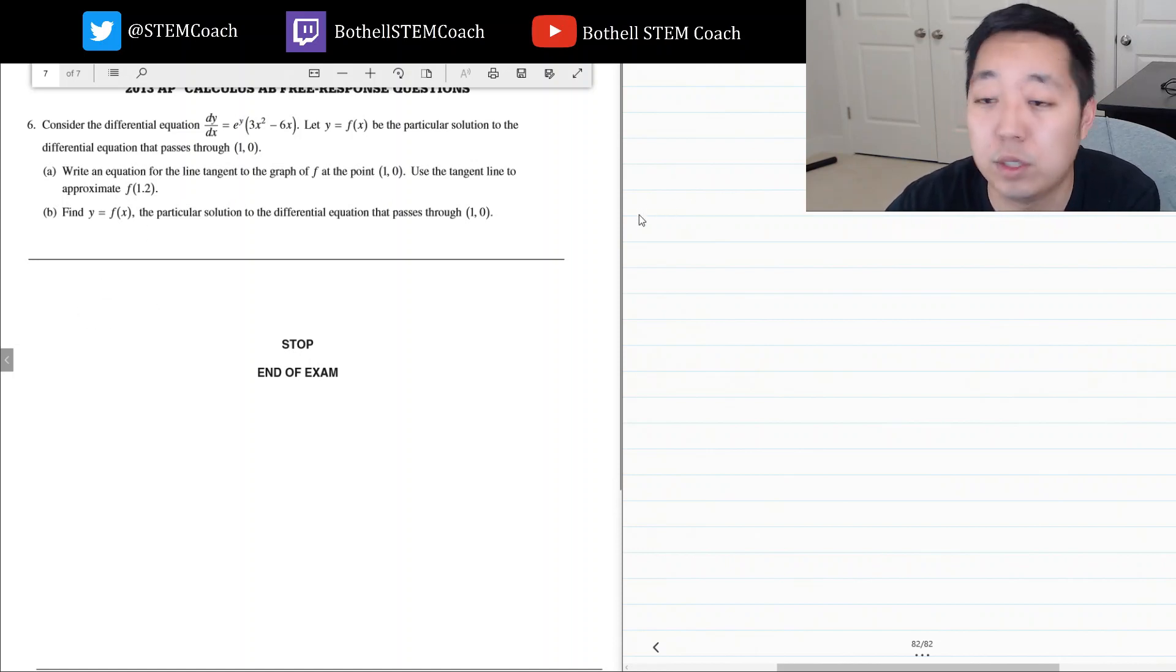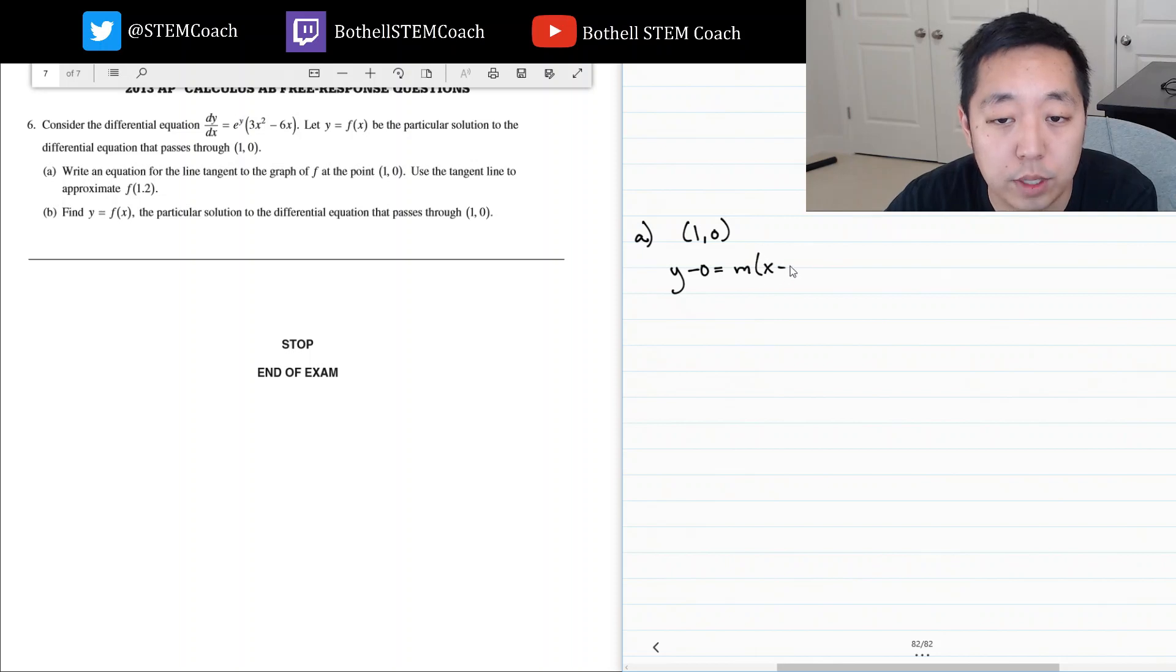Okay, this is pretty straightforward. So y equals f of x tangent line—I need to know a point and a slope to get the equation of any line. I know the point one zero, so I'm going to have y minus zero equals m times x minus one.